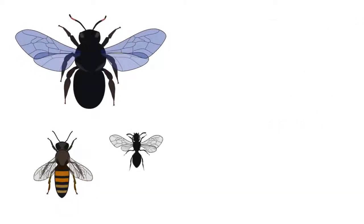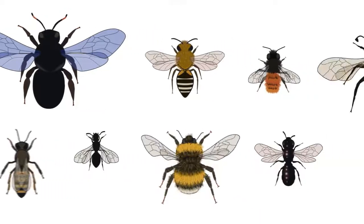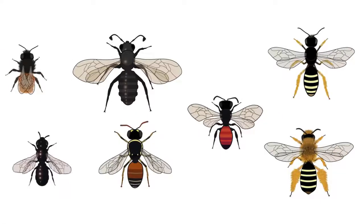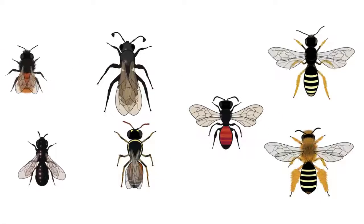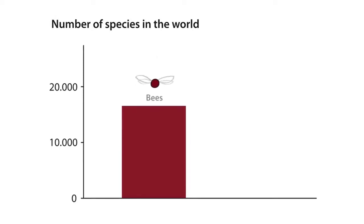Some are big, others small, hairy, or shiny. Some have long antennae, others short antennae. Some have a red bee hind, some have a yellow bee hind. There are more than 20,000 different species of bees in the world.